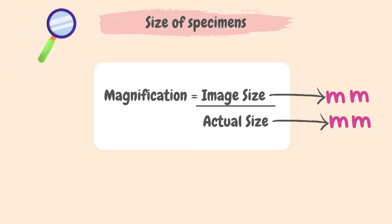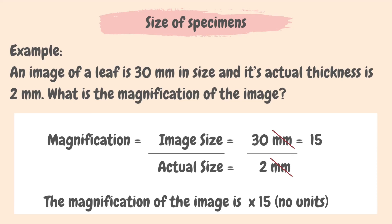Here is an example of where we can use this formula. An image of a leaf is 30 millimeters in size and its actual thickness is 2 millimeters. What is the magnification of the image? Magnification equals image size divided by actual size, which is 30 divided by 2, that's 15. Since both image and actual size have already been given in millimeters, there's no need to convert. Note that magnification has no units.